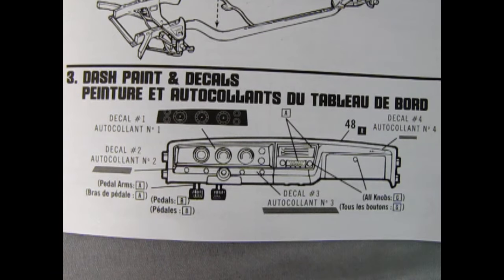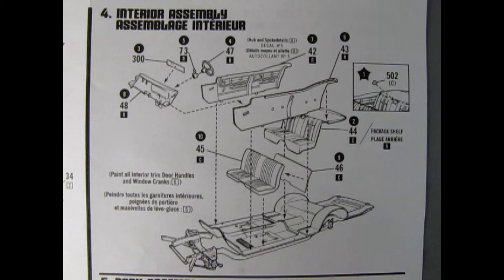Step three, dash paint and decals. Here in panel three we have a decal guide for our dashboard. You can see the gauges being installed as well as some of the wood trim. We also have the Impala decal going on the top of the dashboard and it says to paint all knobs silver and we also have our pedals being painted down below.